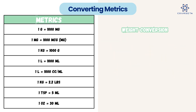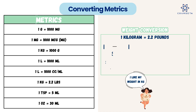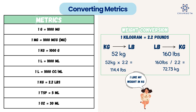For weight conversion, you need to know how to convert kilograms to pounds and vice versa. One kilogram equals 2.2 pounds. A helpful tip: you like your weight in kilograms because the number is lower. To convert from kilograms to pounds — say 52 kg — you multiply 52 times 2.2, which equals 114 pounds. To go from pounds to kilograms — say 160 pounds — you divide 160 by 2.2, which equals 72.73 kg.